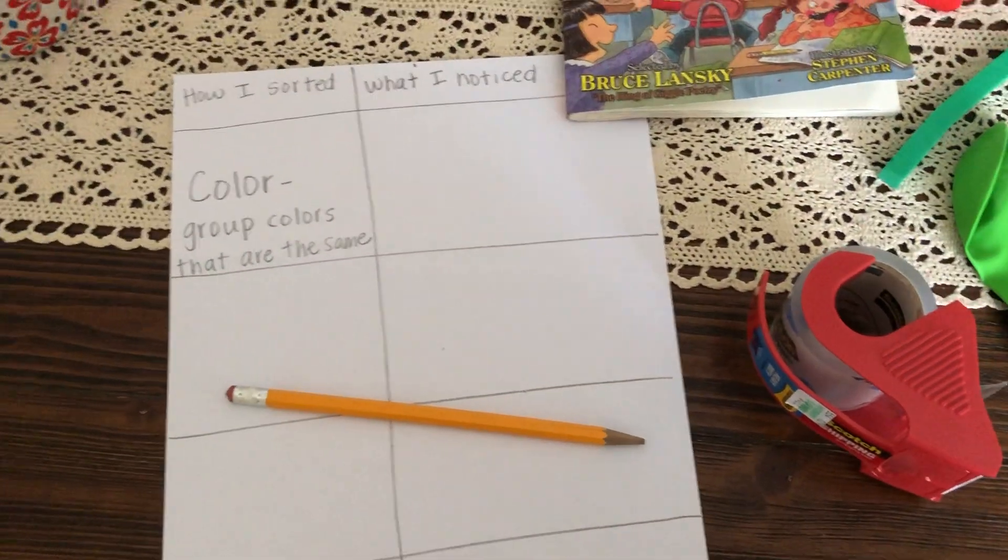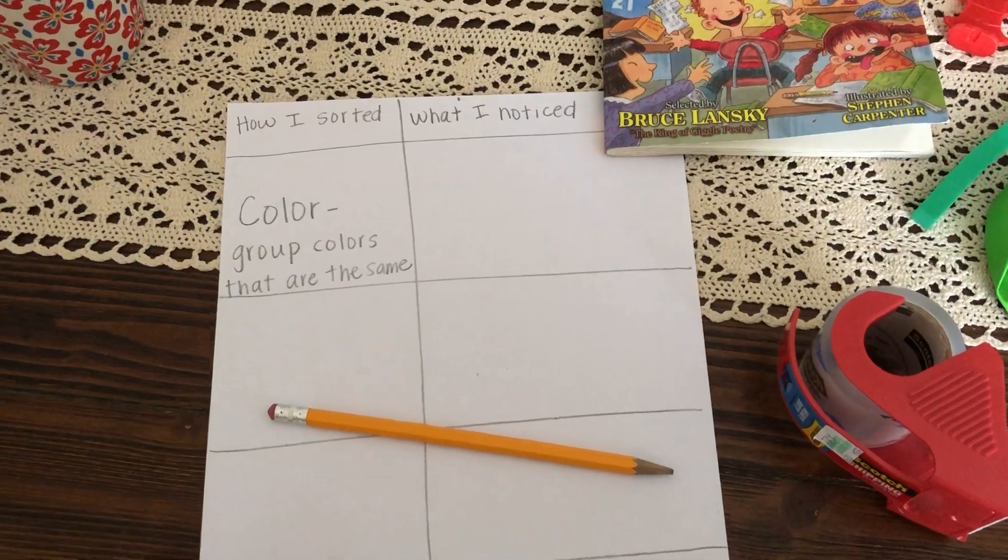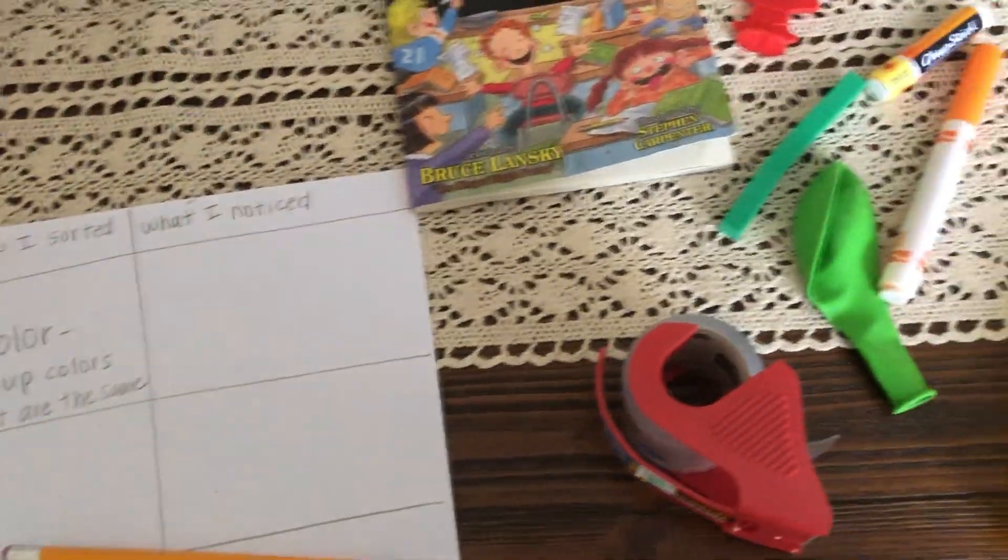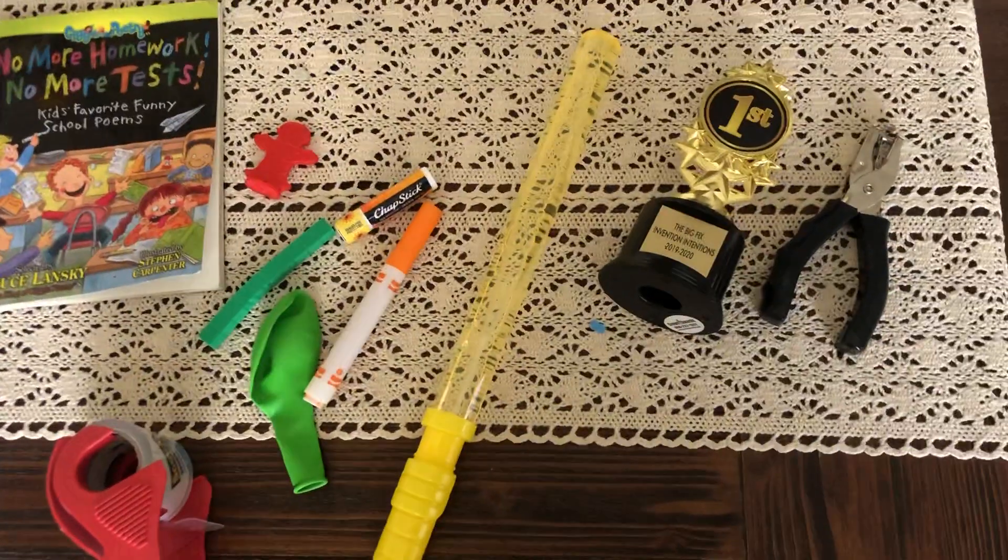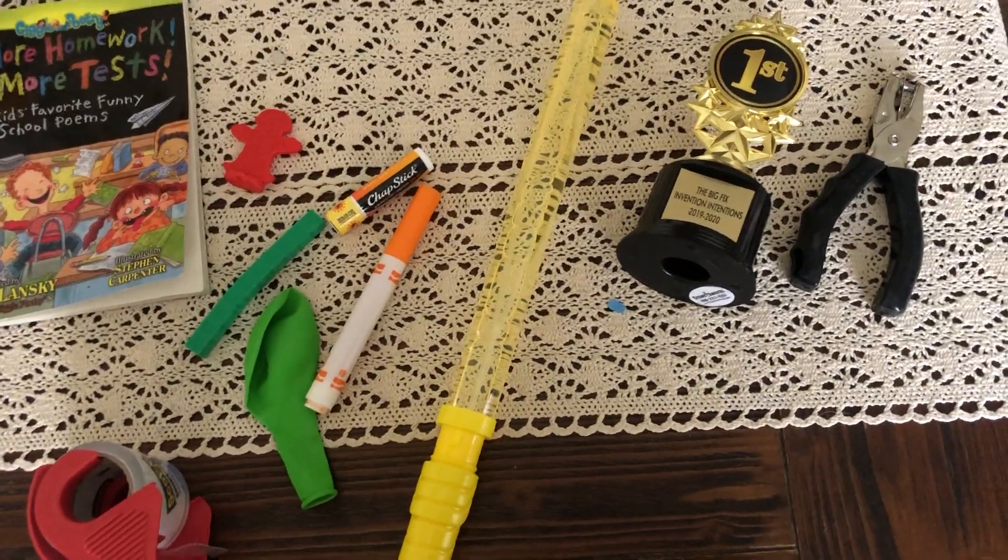Now that I have all my 10 objects and I know that I'm sorting by color, I'm going to group my objects of the same color together. I'm going to start sorting these objects. Let's see what colors I notice first.